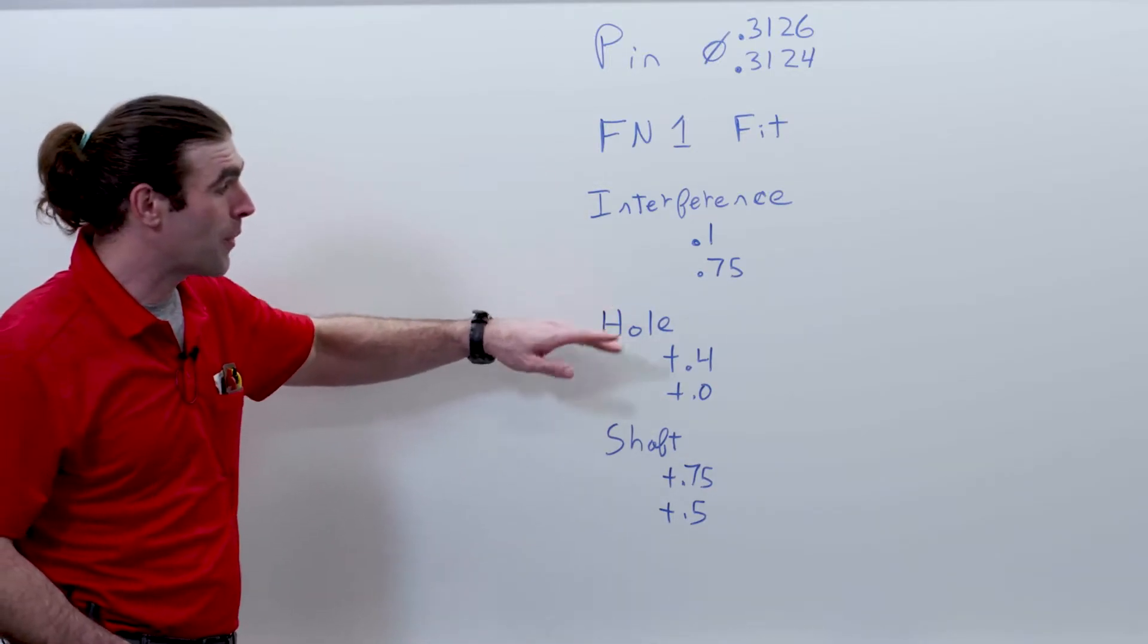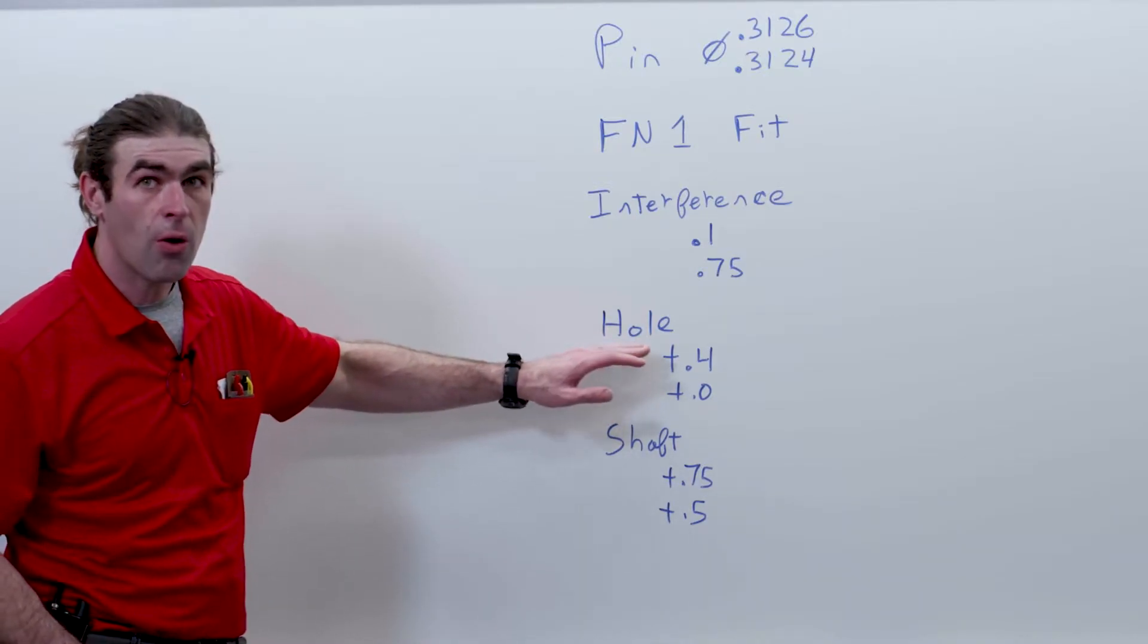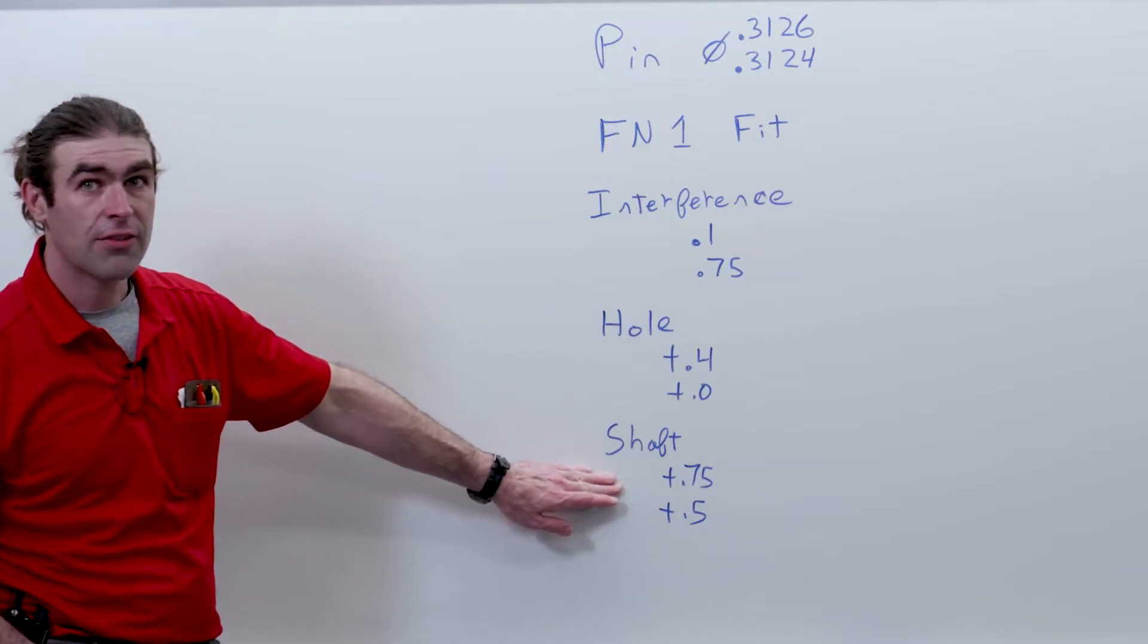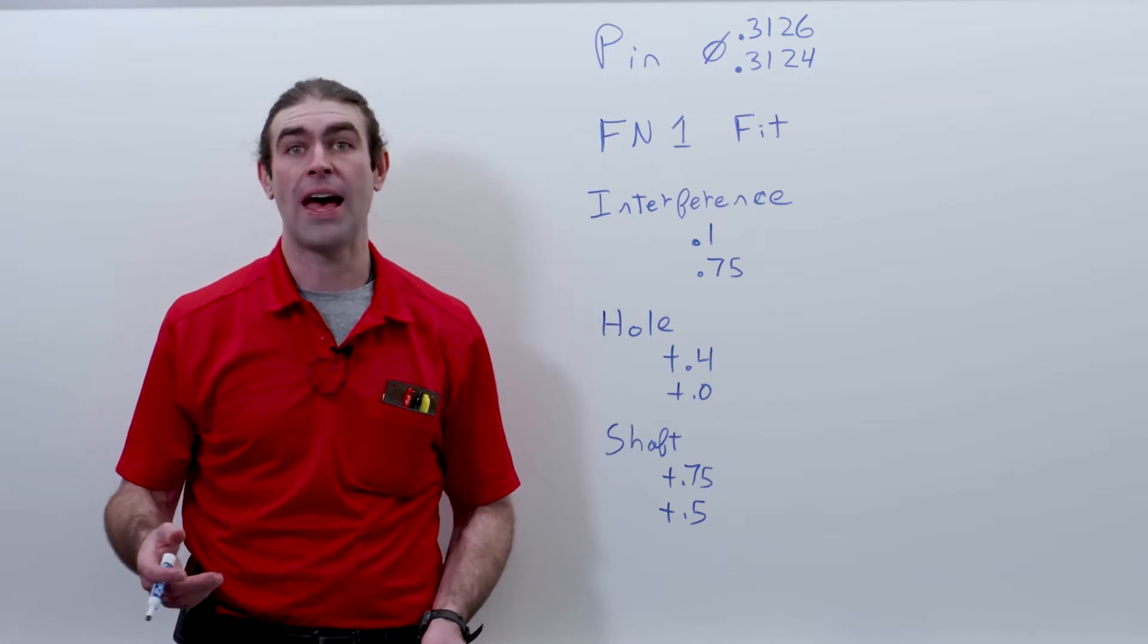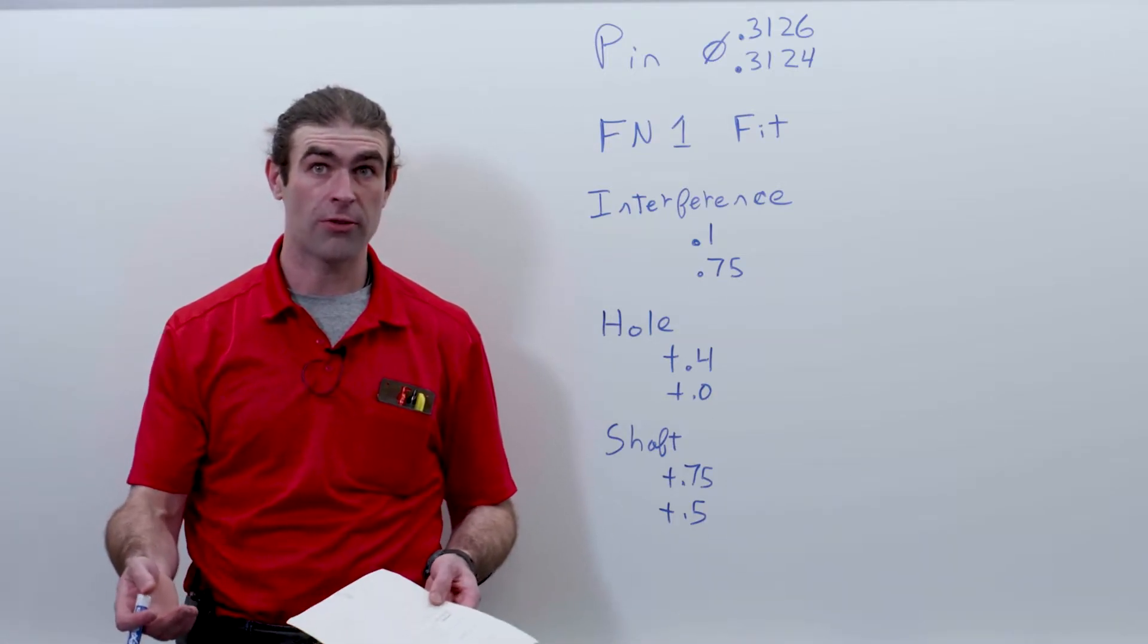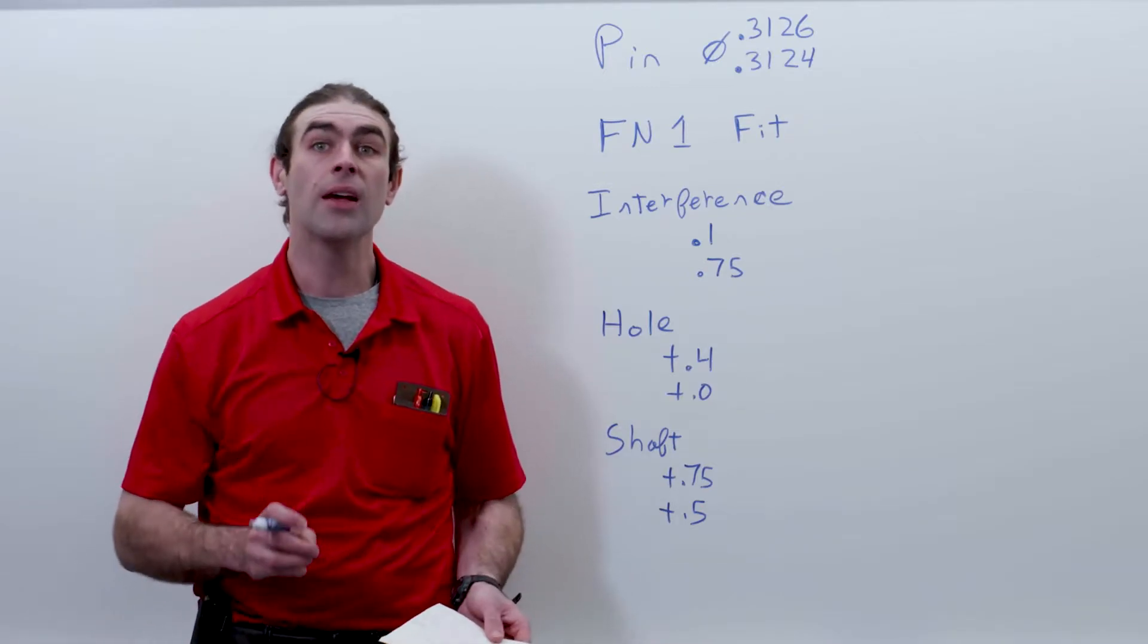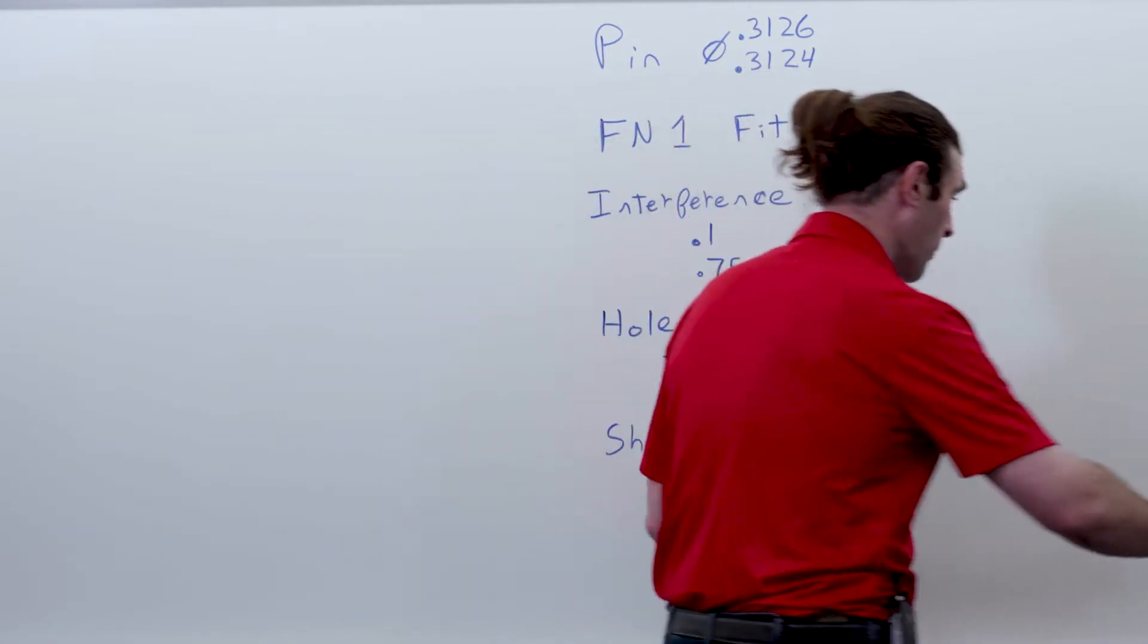The normal method would be to apply positive four-tenths of a thousandth to the hole plus zero, and then add seven-and-a-half-tenths of a thousandth and five-tenths of a thousandth to the shaft. But we can't use these numbers because we already know what the dimension and the tolerance of the shaft is. So for this calculation, we actually don't need these numbers, so I'm going to go ahead and erase them.